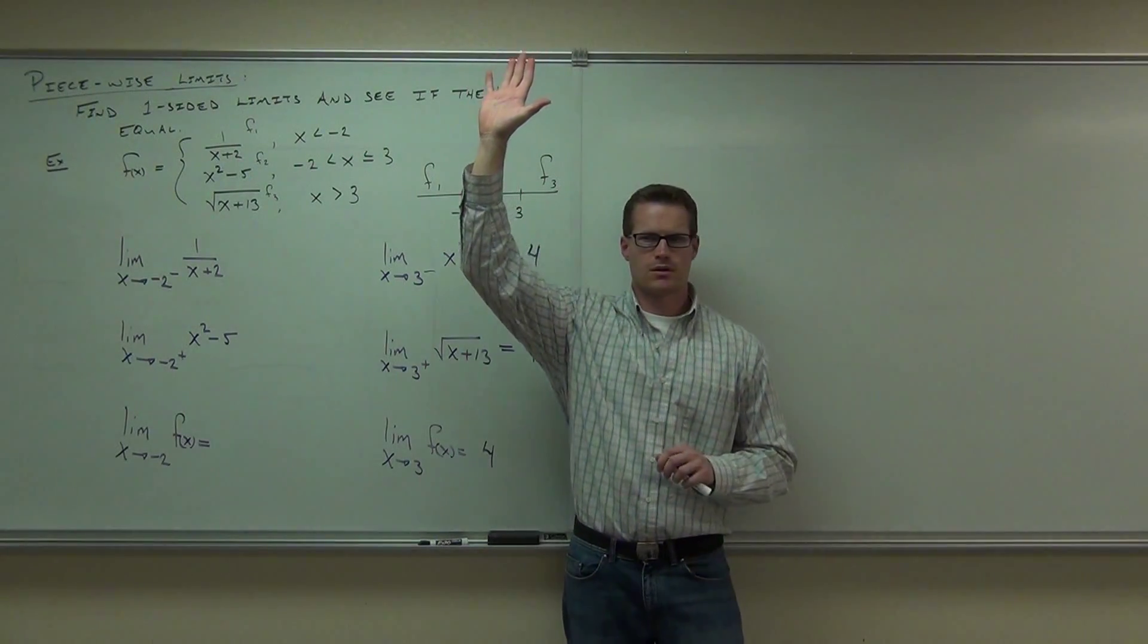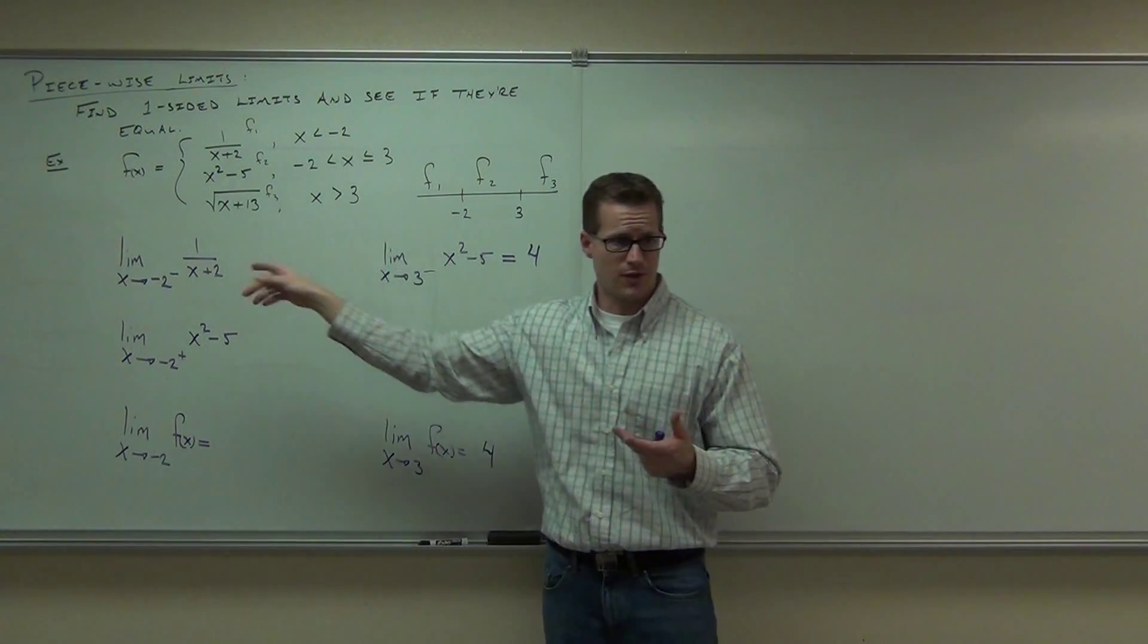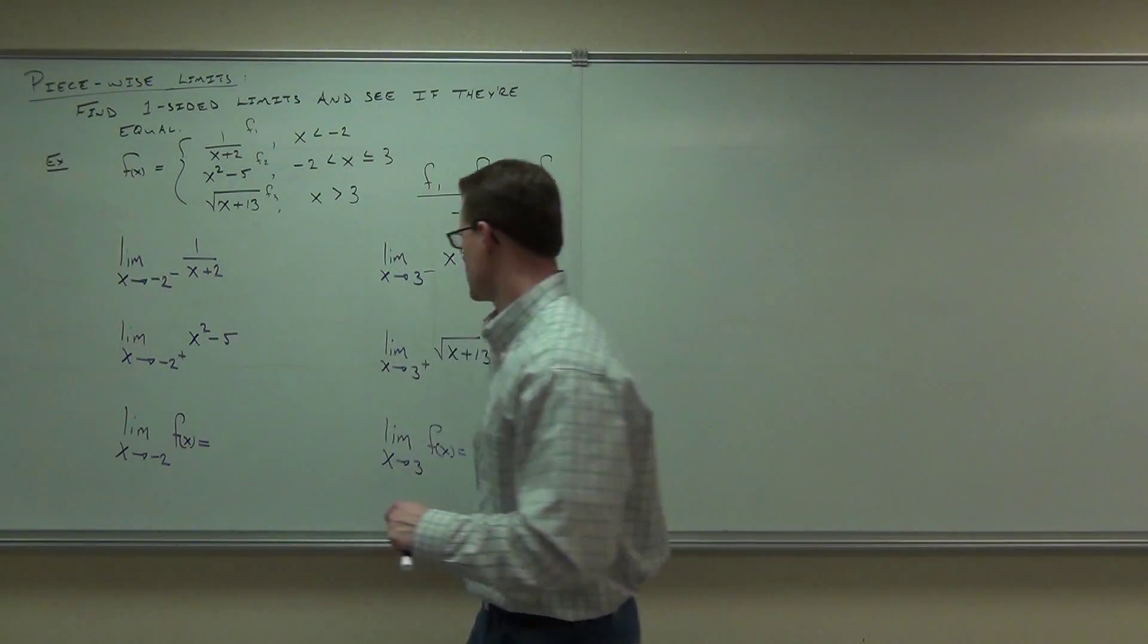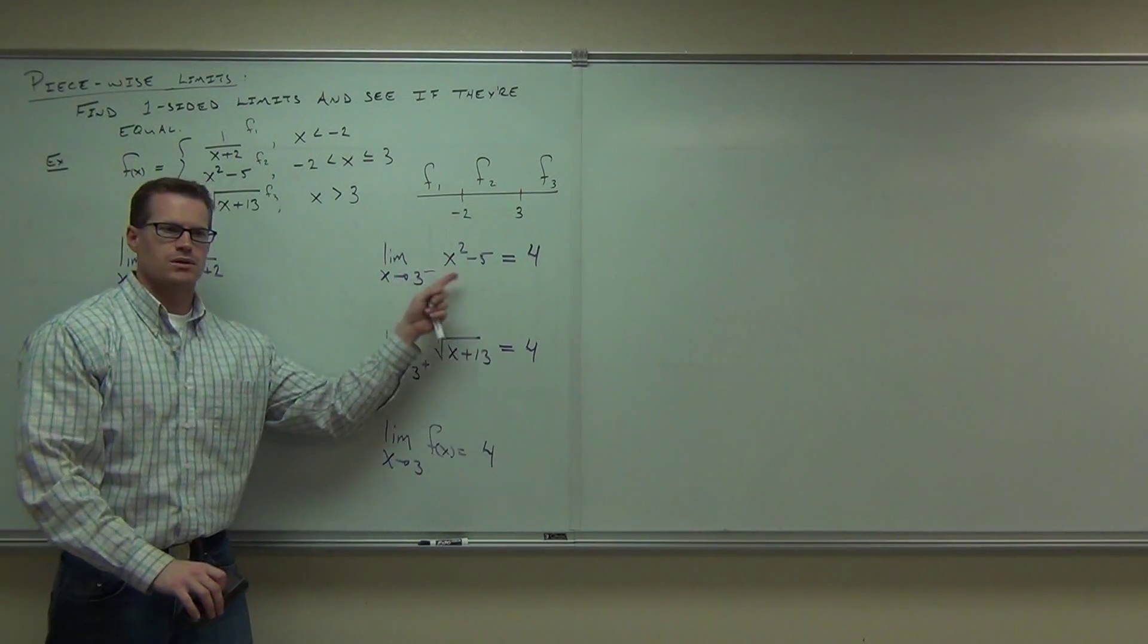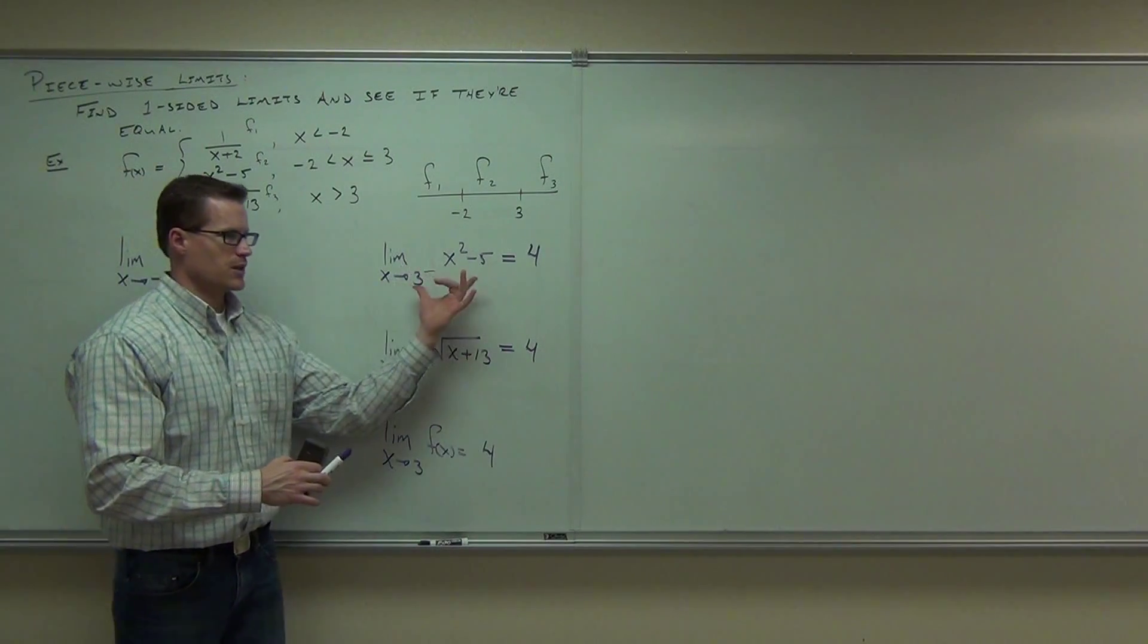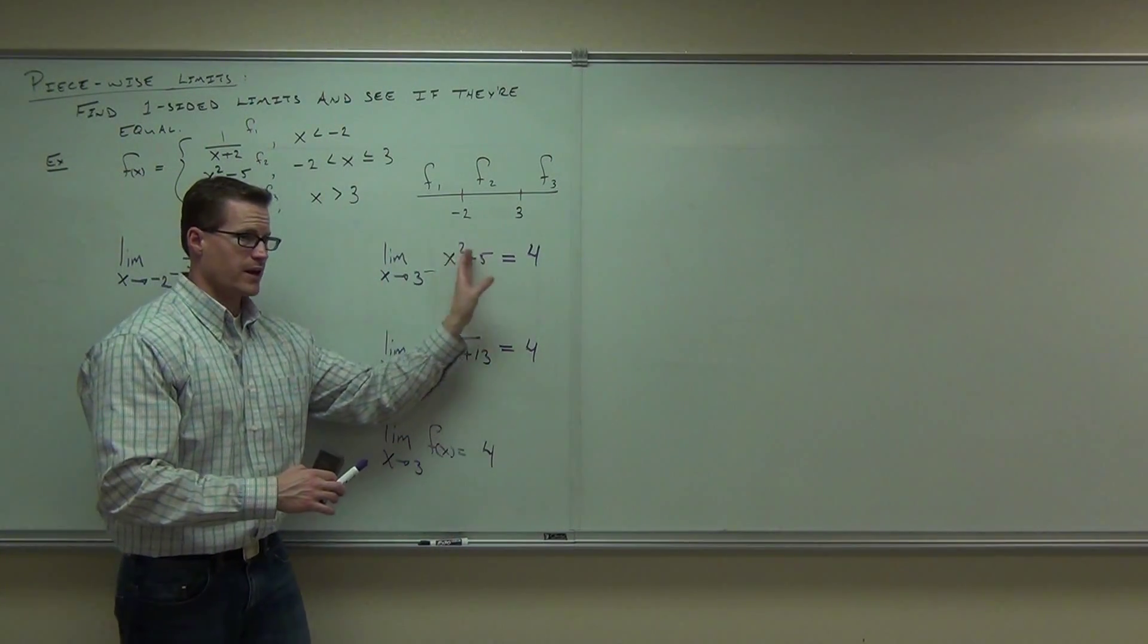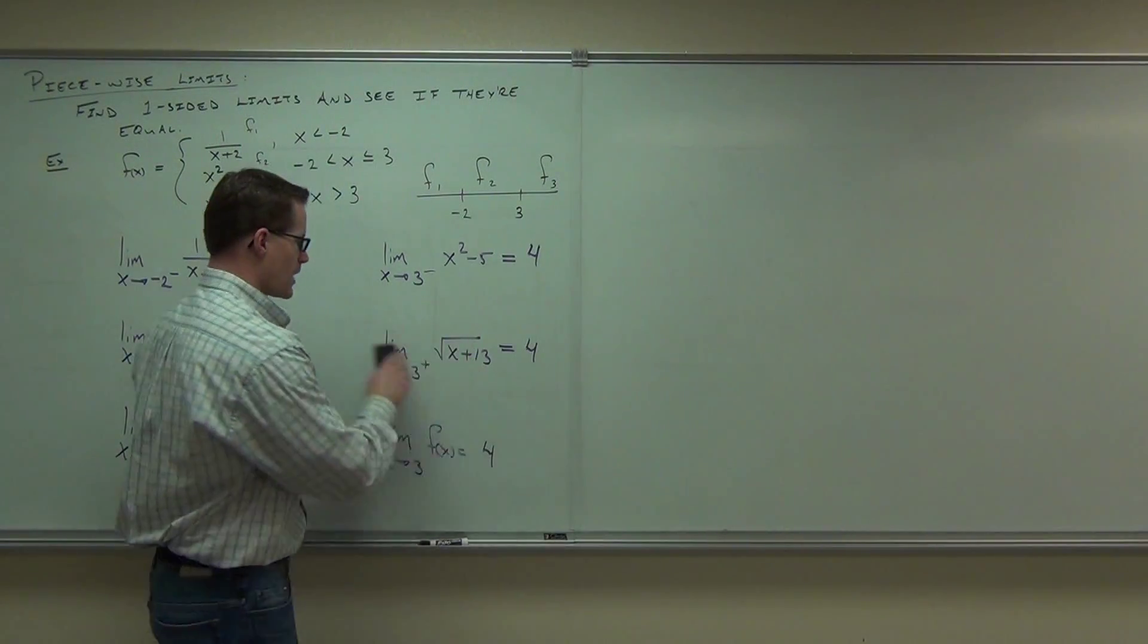Are you okay with that one so far? Kind of nice, right? One-sided limits aren't so bad. These piecewise functions, they can get kind of messy. Any questions on this? So again, if a limit exists, a one-sided limit will exist. Find out your one-sided limits. If they're the same, then the limit at that point for sure exists.